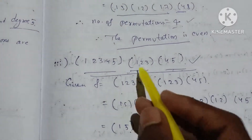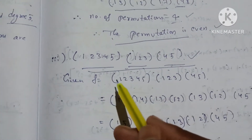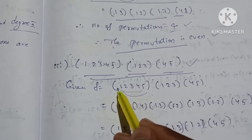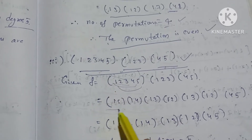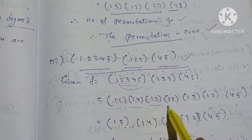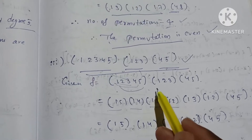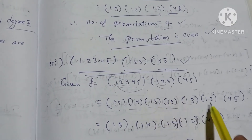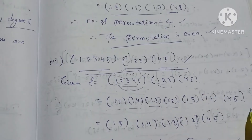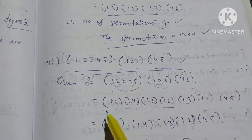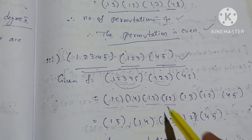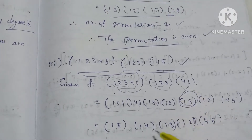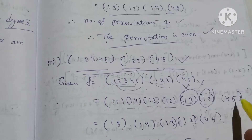For cycle (1,2,3,4,5): first, back to the first element — (1,5), (1,4), (1,3), (1,2). Next for cycle (1,2,3): (1,3), (1,2). So (1,3), (1,2), and (4,5). Then for (1,2,3): (1,3), (1,3), (1,2) repeated. (1,2) repeated. (4,5).